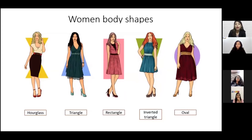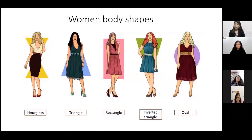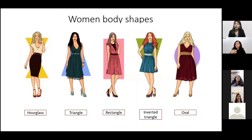For an hourglass body shape, your chest measurement equals your hip measurement and your waist is very slim and well defined. For a triangle body shape, your hip measurement has the largest reading compared to your waist and chest. If you gain weight, it accumulates around the hip region, while your shoulders, arms, and neck remain slender and elegant.